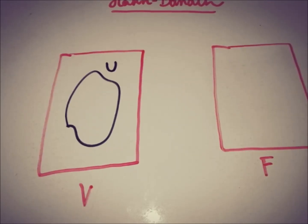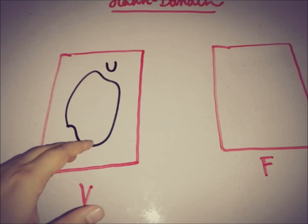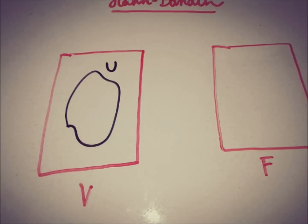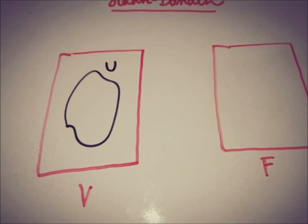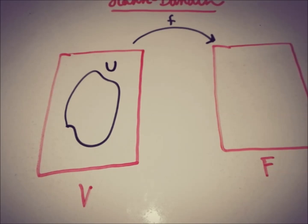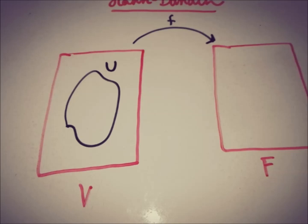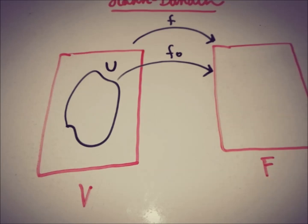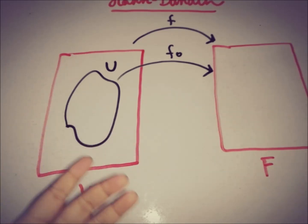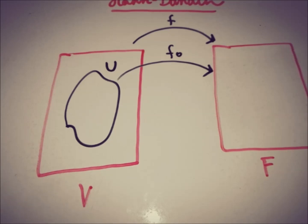For the extension: we have V a linear space, U is a subspace of that linear space V, and F is a field. A functional F is defined from V to F, and another functional F₀ is defined from U to F.